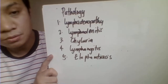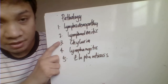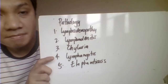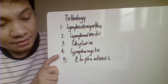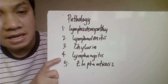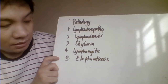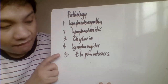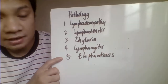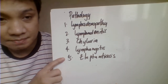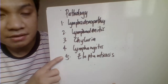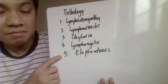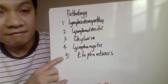Chyluria is the rupture of the urinary bladder due to parasite infection, characterized by cloudy, milky urine. Lymphangitis is the inflammation of blood vessels. Elephantiasis is the enlargement of organs or body extremities, including the legs, due to blockage of the lymphatic vessels.